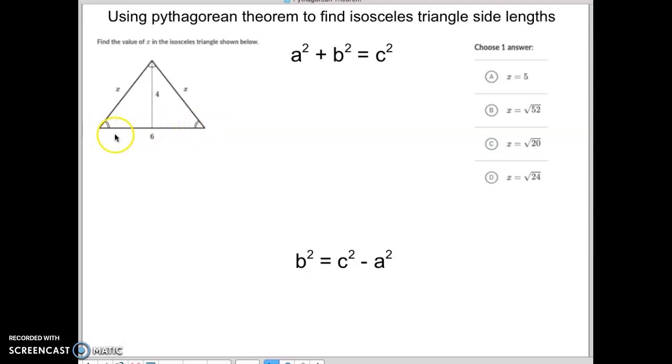If we know that this full length is 6, and we know that this is halfway down, because it's an isosceles triangle, then we know that the short length here is 3.